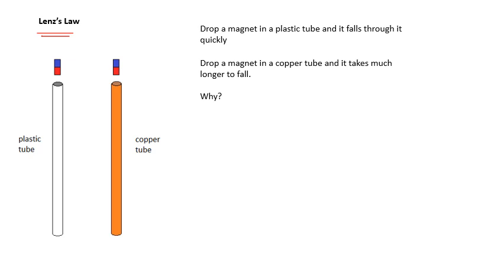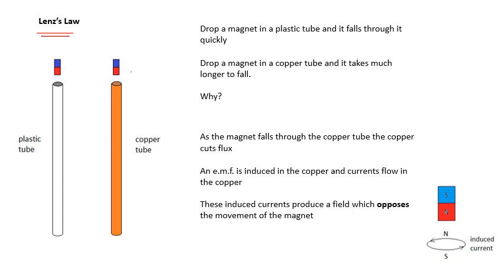Basically, as the magnet falls through the copper tube, now, the copper is a conductor. So, it's cutting flux. As the magnet moves through it, it is cutting flux. So, we're going to get an EMF induced in the copper. And because currents can flow in circles around the copper tube, what we're going to do is we're going to get induced currents as well. So, we're going to get currents flowing in the copper tube. And these currents are going to produce their own magnetic field. And that magnetic field will oppose. It will try to slow down the magnet falling in. So, there's two magnetic fields now which are opposing each other.